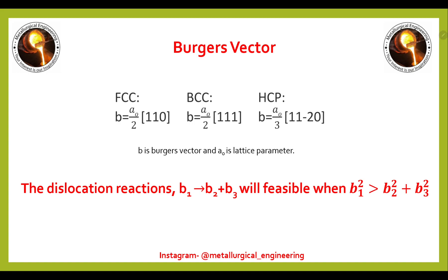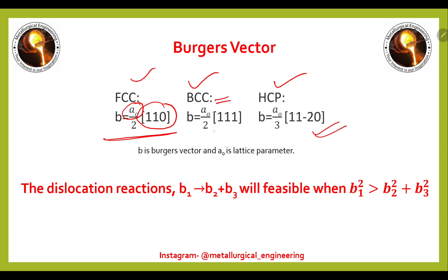Now we will see the common Burgers vectors used in practice for cubic crystals — FCC, BCC, and HCP. For FCC: b = (a₀/2)[110]. For BCC: b = (a₀/2)[111]. For HCP: b = (a₀/3)[11̄20].